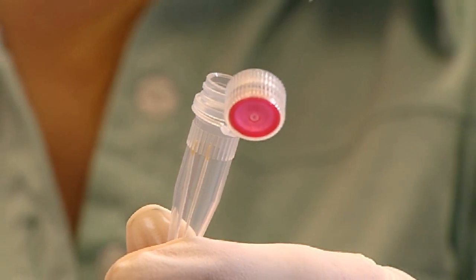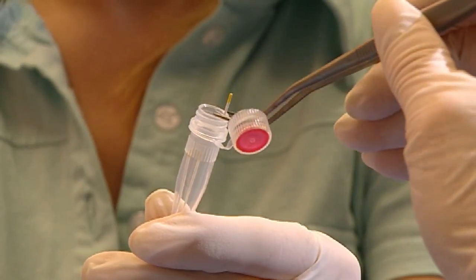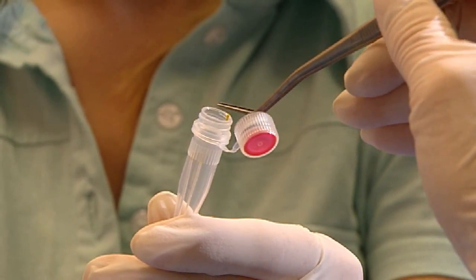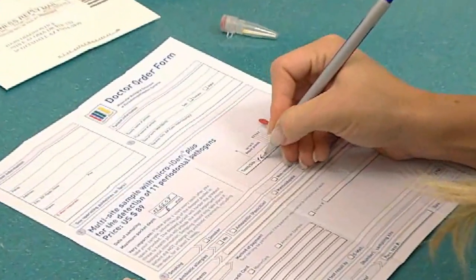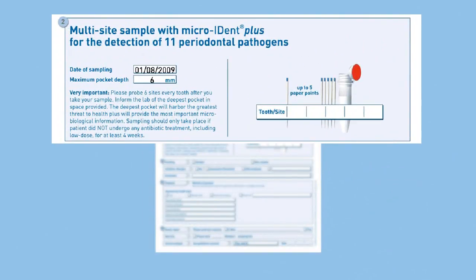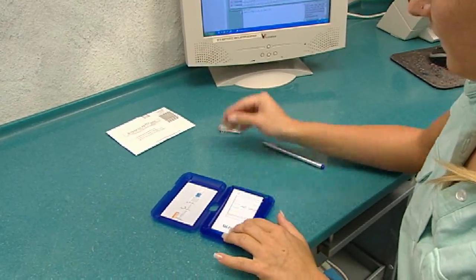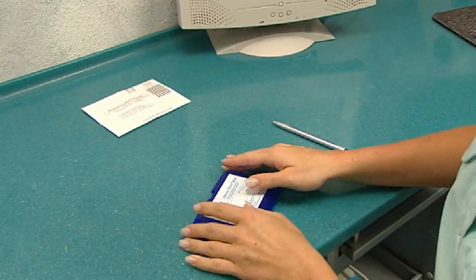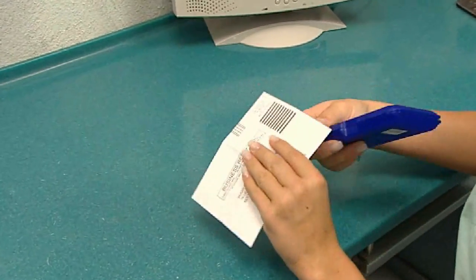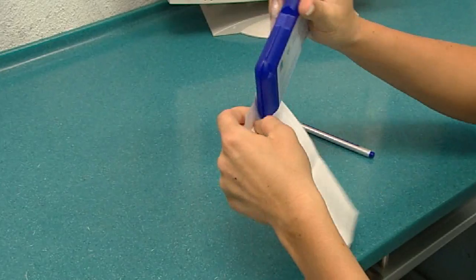Up to five paper points can be combined together in the transport tube with the red cap. Note the date on which the specimen was taken, the patient's maximum pocket depth, as well as the specimen sites on the order form. Place the transport tube and the completed order form together in the blue shipping box and mail these in the self-addressed postage-paid envelope.